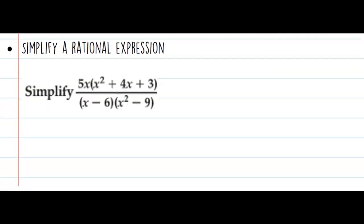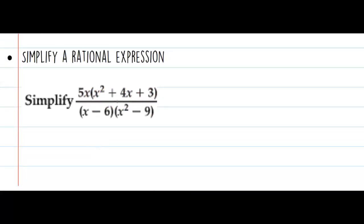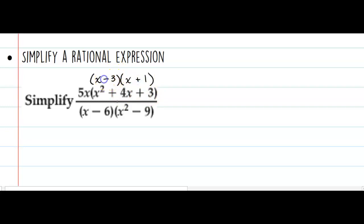On this first example, the numerator is 5 times x times this trinomial. We want to think: how could I split this trinomial into two pieces? I'm looking for two numbers that multiply to give me 3 and combine to give me 4, which would be positive 3 and positive 1. Get in the habit of crossing something out once you've factored it so you don't think it's still there.